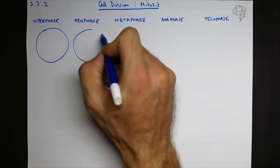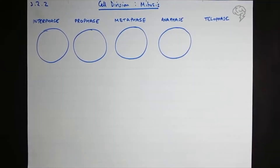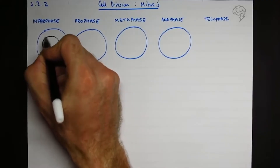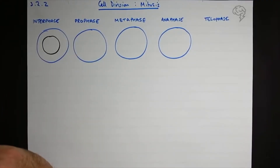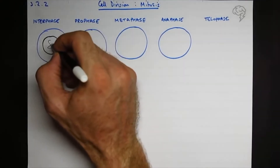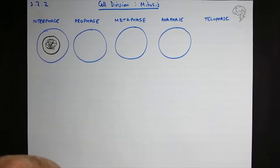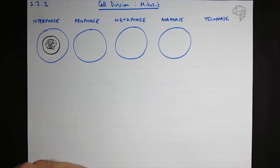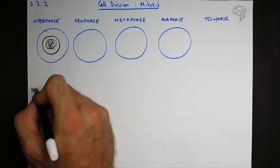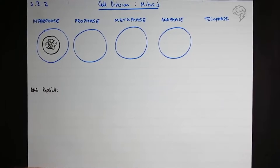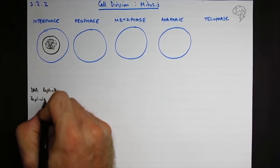I'm going to draw a round cell for each of these stages. During interphase, there's obviously a massive nucleus - it looks a bit like a fried egg. During interphase, the DNA is all wrapped up and folded up in chromatin, so we can't see the chromosomes. The most relevant thing that happens during interphase is that the DNA replicates - that's pretty important. You also replicate the organelles.